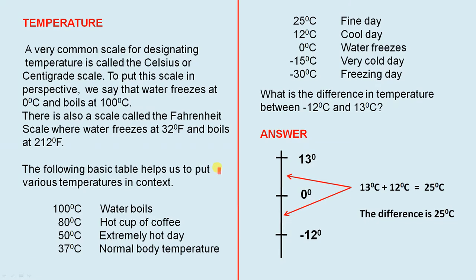The following basic table puts various temperatures in context. 100°C is where water boils. 80°C is approximately a hot cup of coffee. 50°C is an extremely hot day. 37°C is normal body temperature. 25°C is a fine day. 12°C is a cool day. 0°C is where water freezes. Minus 15°C is a very cold day. And minus 30°C is a freezing day — you definitely don't want to stay out there for too long.